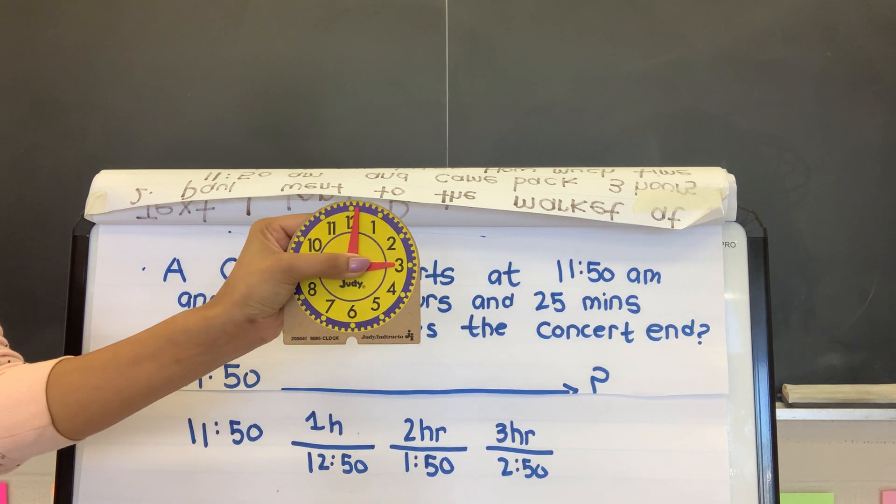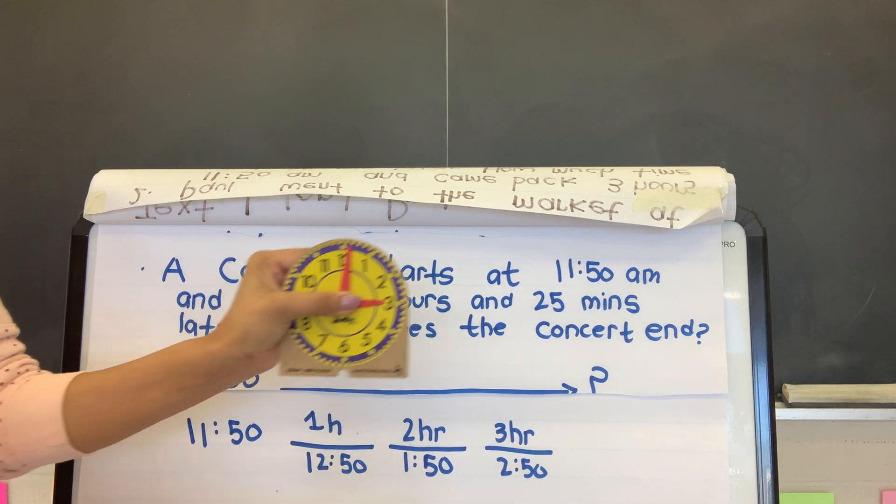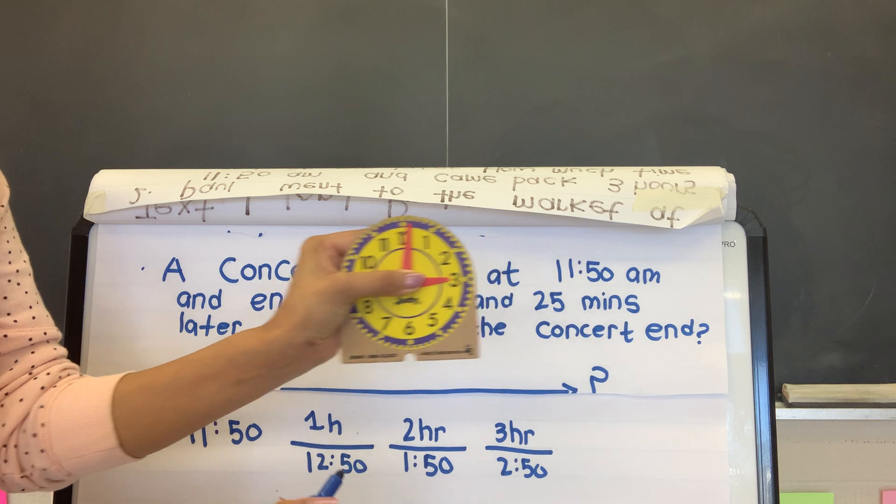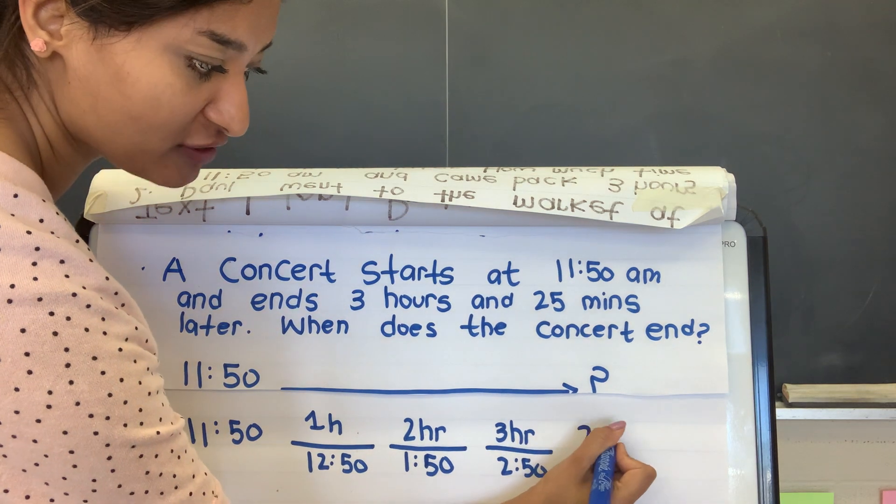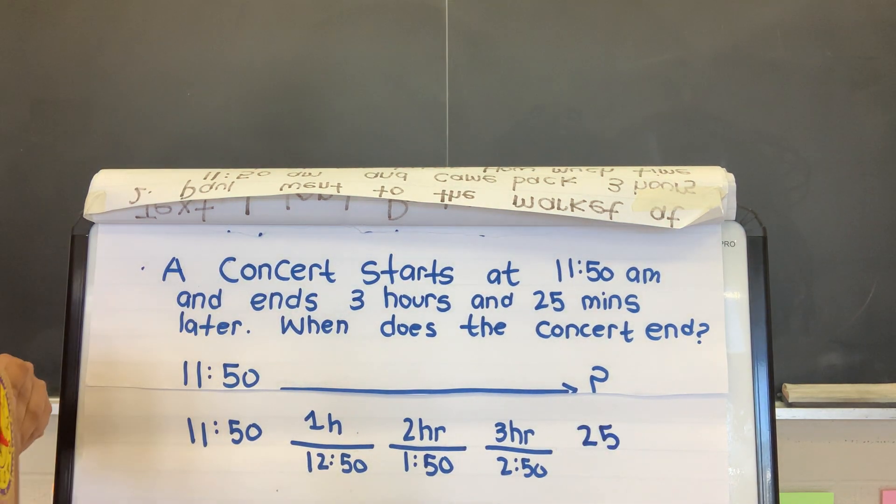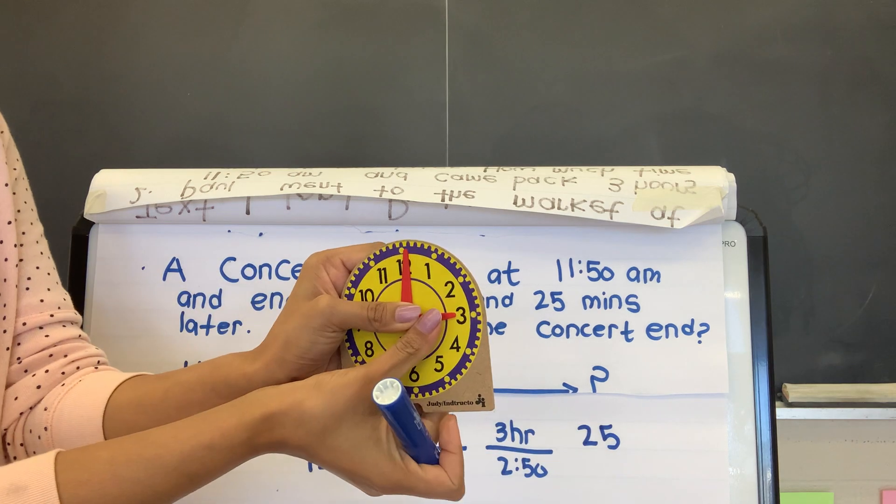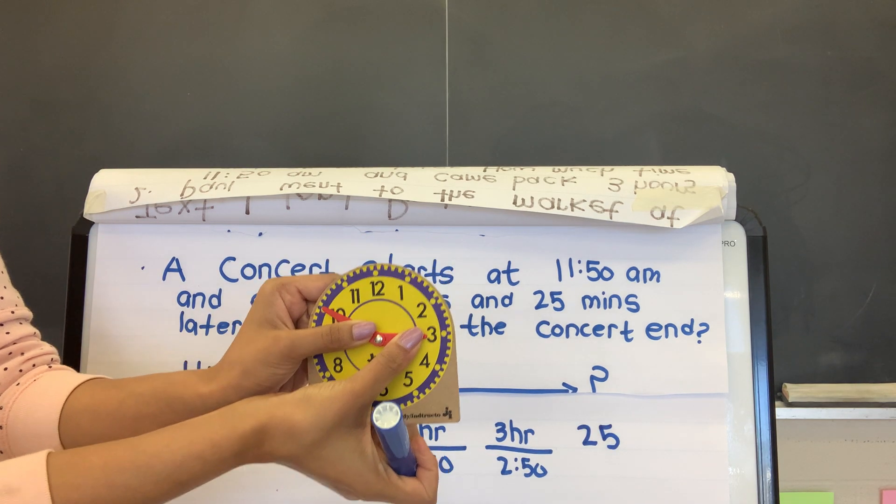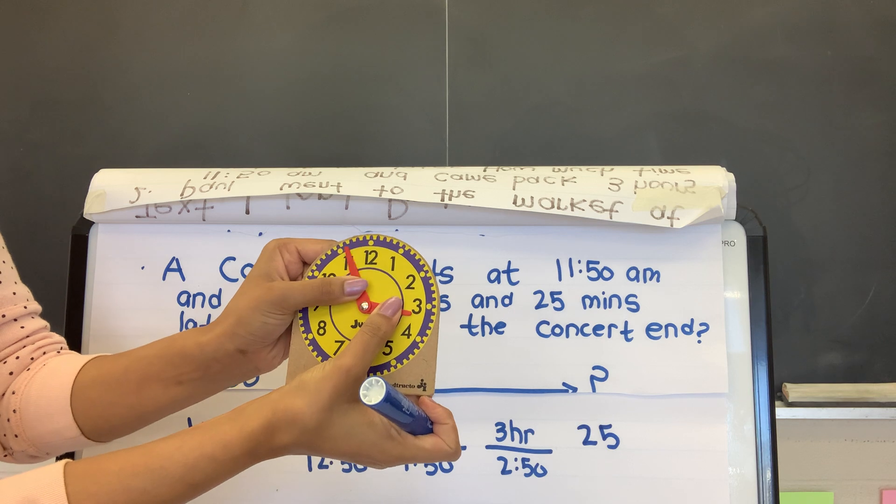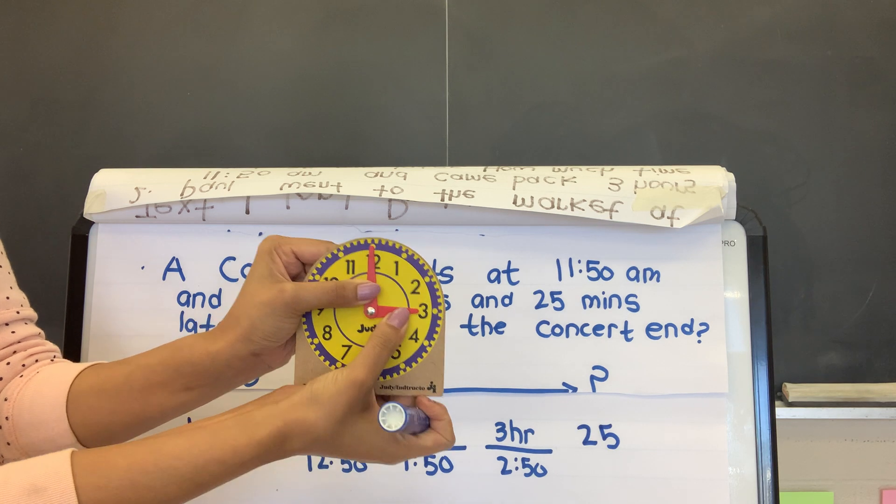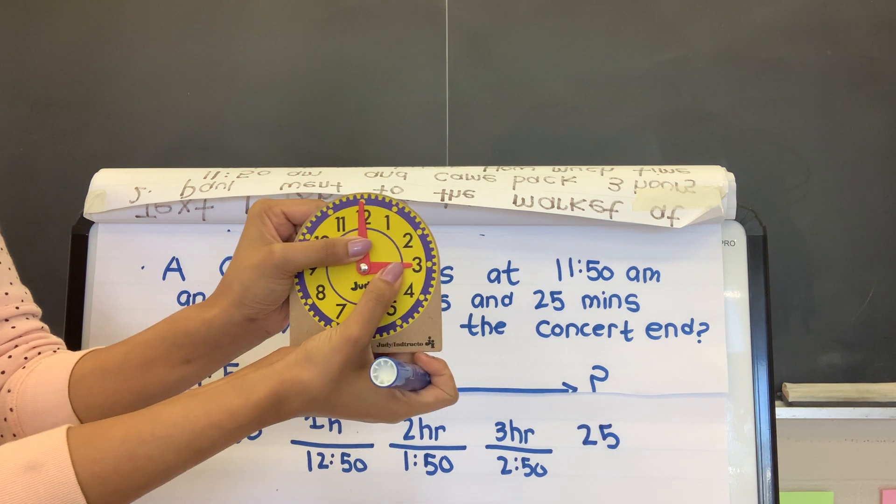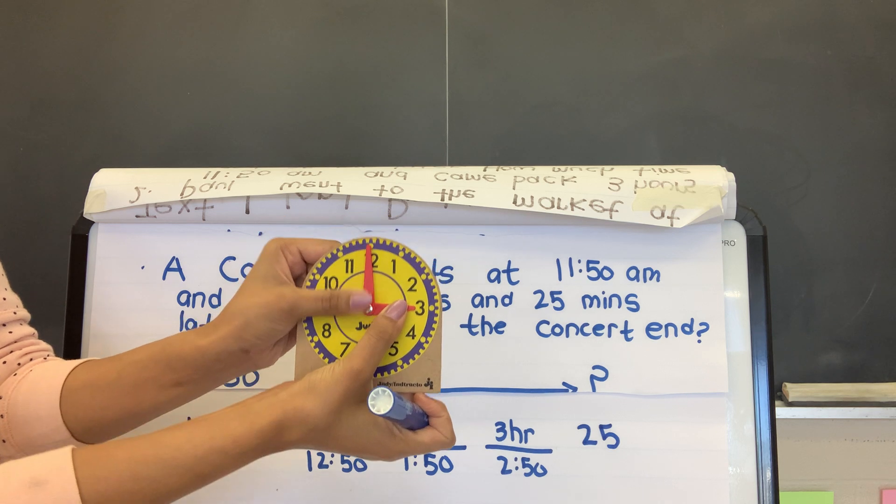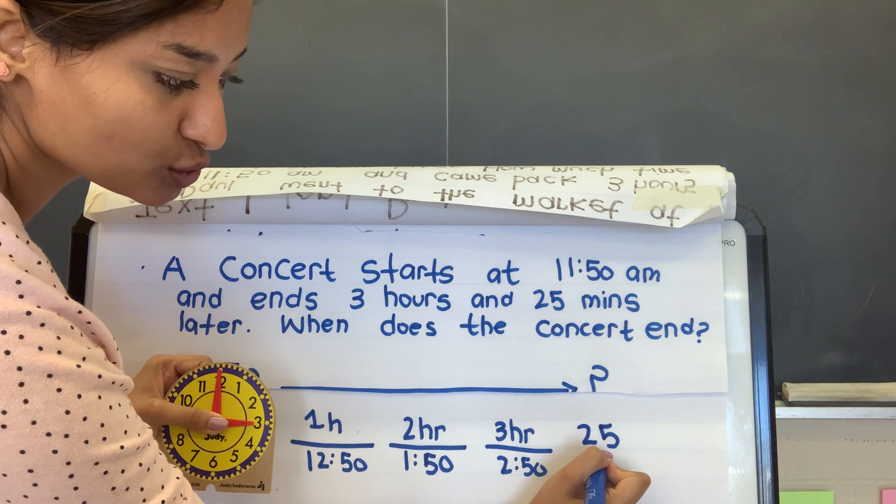So before I confuse myself, I am going to do this. I am going to say that out of 25 minutes, so I have 25 minutes left. And out of 25 minutes, I am going to add 10 more minutes, so I know that it is going to be 3 o'clock, 3 something.